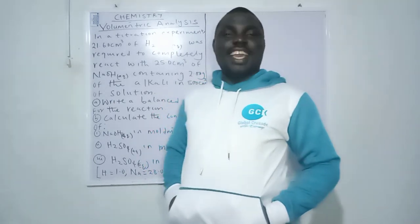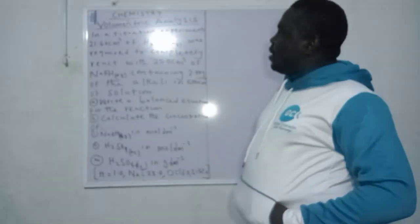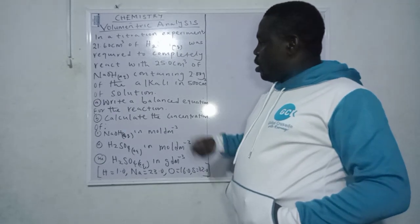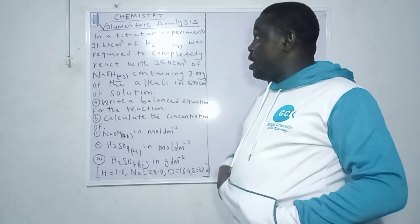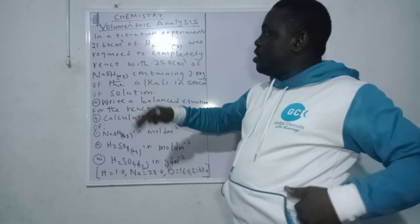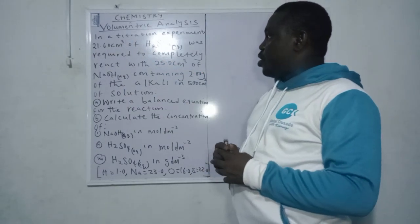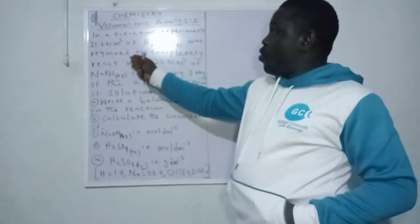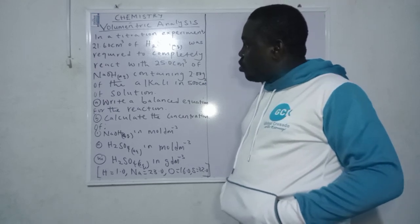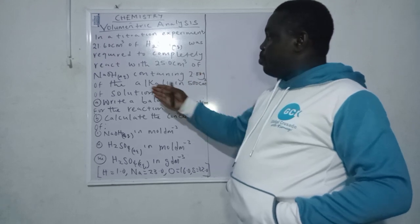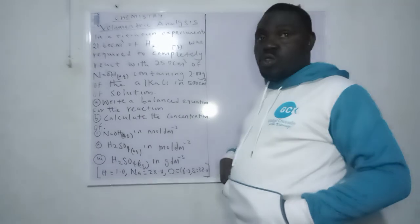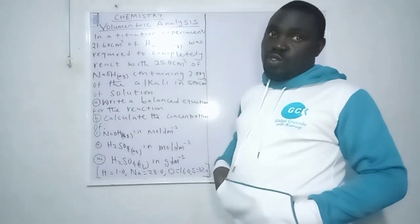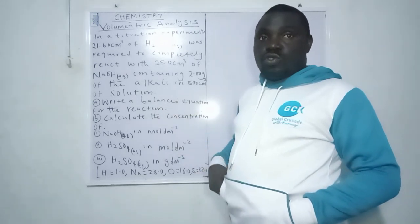Today I'll be looking at something very important, knowing fully well that tomorrow is chemistry practical for our students. I have an exam question from 2019 here for you. In a titration experiment, 21.60 cm³ of H₂SO₄ — hydrogen tetraoxosulfate(VI) acid — was required to completely react with 25 cm³ of sodium hydroxide containing 2.0 grams of the alkali in 500 cm³ of solution. The first thing we are told to do is to write a balanced equation for the neutralization reaction.